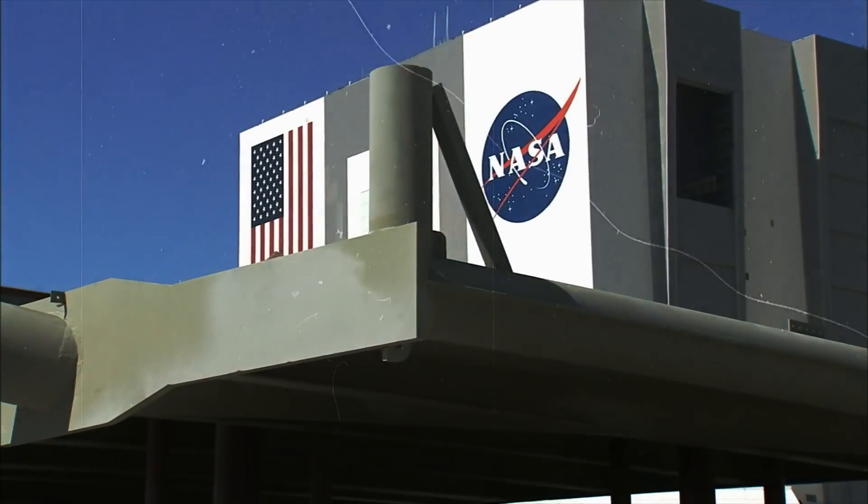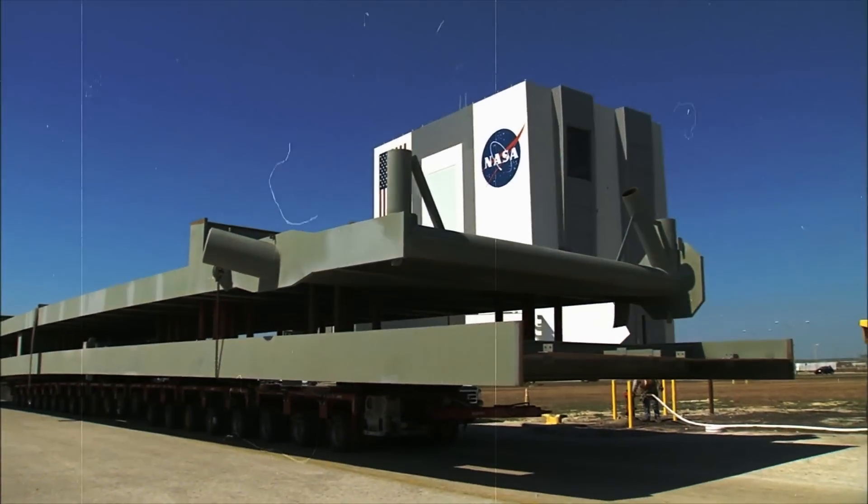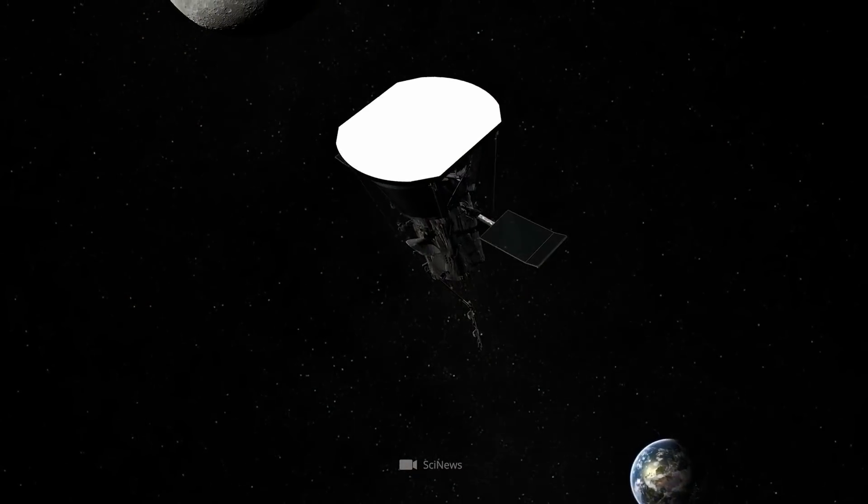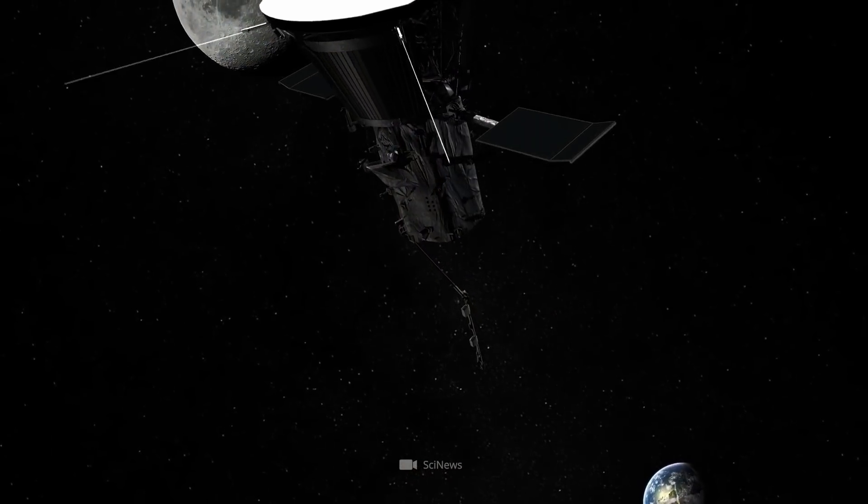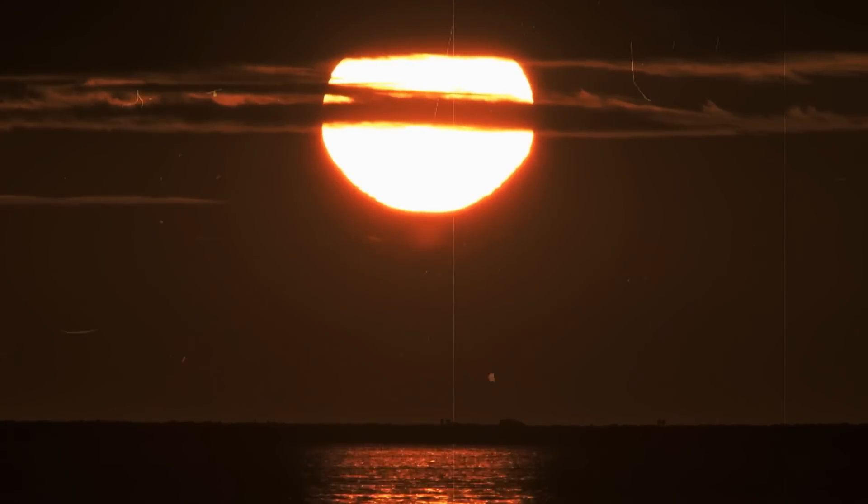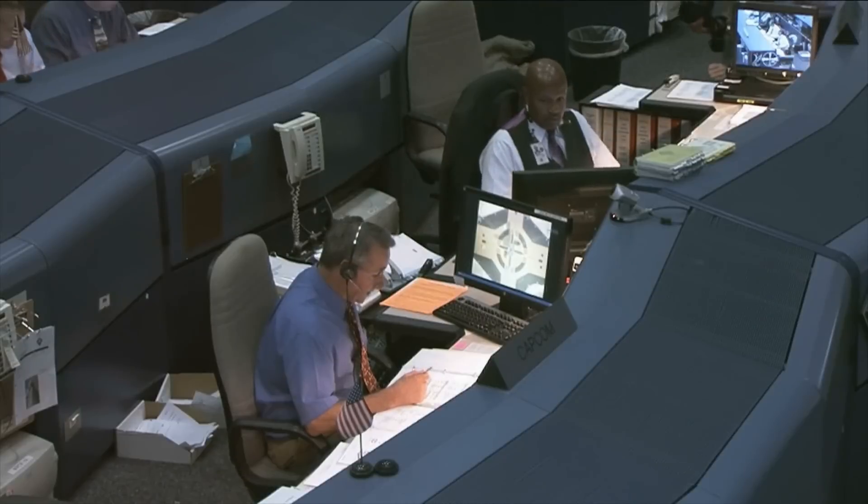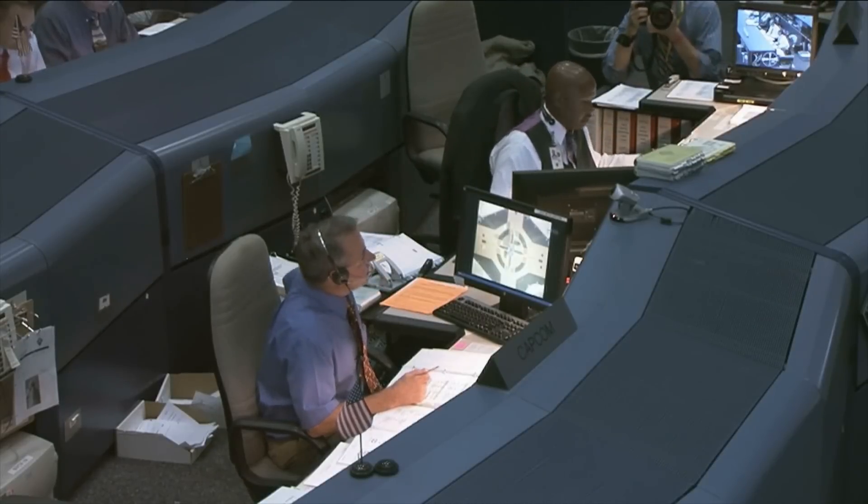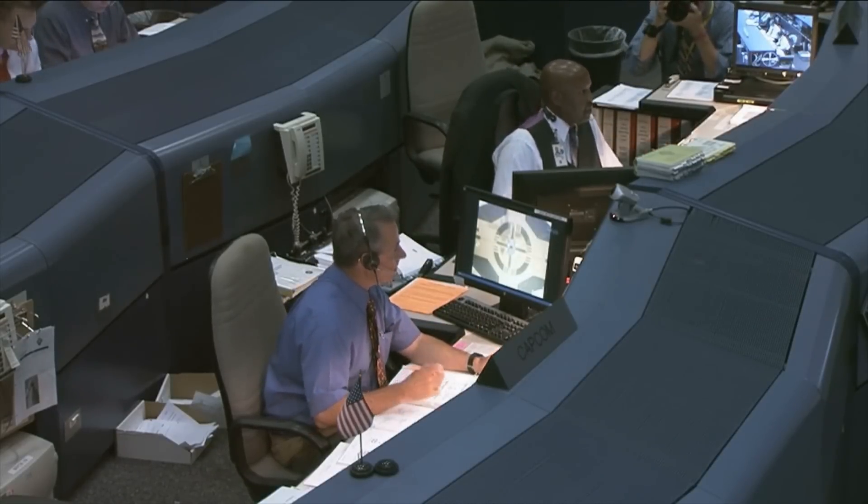But since NASA obviously didn't have enough sunscreen in stock, they decided instead to send a special spacecraft to our mother star with Parker Solar Probe to take knowledge about our source of warmth and life to a whole new level. But how is it that the renowned space agency is actually following in the footsteps of Icarus?